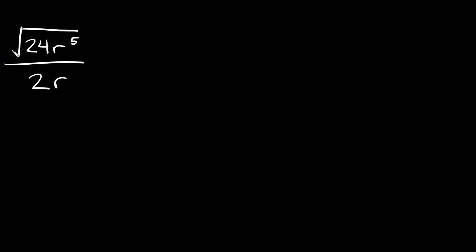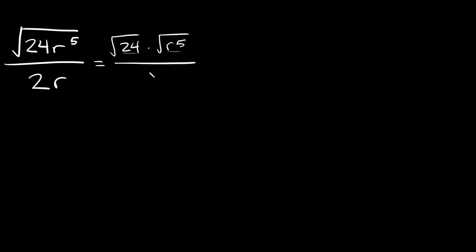Here we have the square root of 24r to the fifth over 2r. This one's a little different because we don't have a radical in the denominator, just in the numerator, so that's the only one we really have to simplify. What you want to do is split up your radical between your numbers and your variables — the square root of 24r to the fifth breaks into the square root of 24 times the square root of r to the fifth, all over 2r.